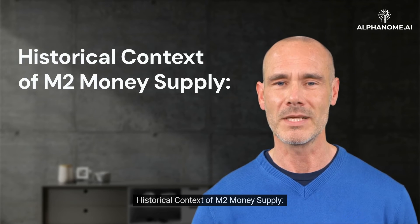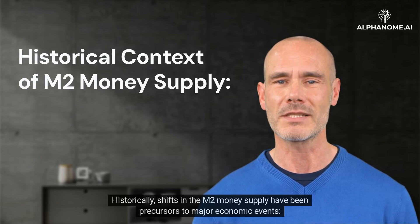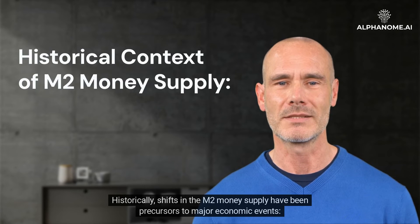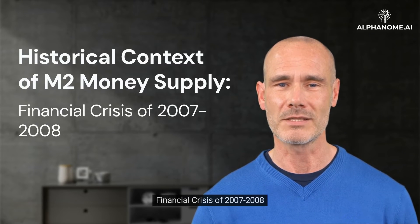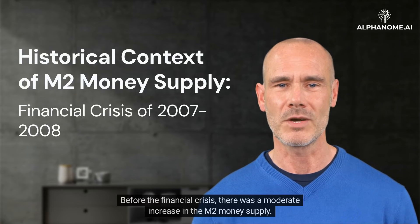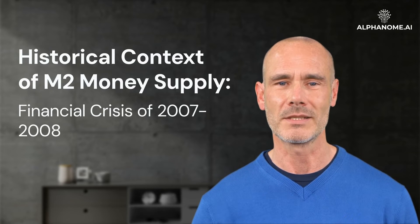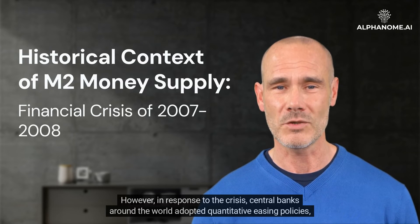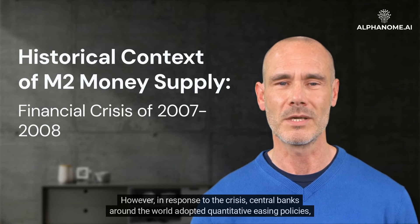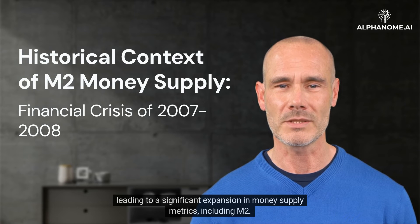Historical context of M2 money supply. Historically, shifts in the M2 money supply have been precursors to major economic events. Before the financial crisis of 2007–2008, there was a moderate increase in the M2 money supply. However, in response to the crisis, central banks around the world adopted quantitative easing policies, leading to a significant expansion in money supply metrics, including M2.